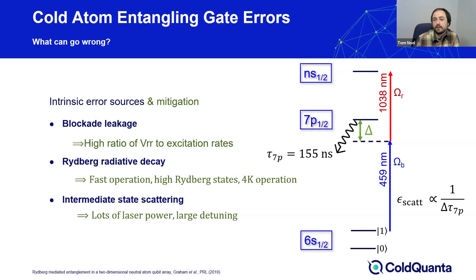Third — not quite intrinsic but still purely atomic physics — at a finite detuning from the intermediate state, the population in that adiabatically-eliminated intermediate state won't be exactly zero. In recent gate demonstrations, even with relatively low Rydberg powers, this effect contributes to an error budget at roughly the 10^-3 level, but given reasonable improvements in laser power, this can also be strongly suppressed.